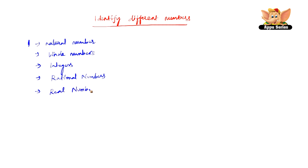Therefore, 1 is a real number, it is a rational number, it is an integer, it is a whole number, as well as a natural number.